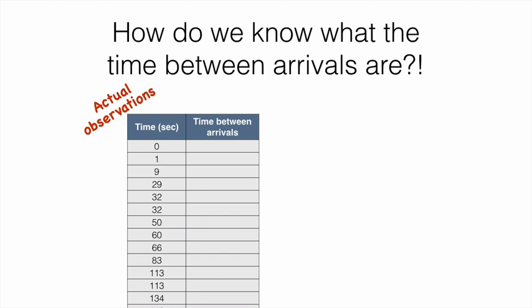If we're interested in the time between arrivals, we will not have a value for the first one because there is no preceding part observed. For the next part we calculate the difference in the absolute times observed. The second part arrived at one second minus the initial arrival time of zero seconds, giving a time between arrivals of one second. For the third part we take the difference between one and nine, which is eight seconds. For the fourth part it is 20 seconds, and we can do this for all parts.